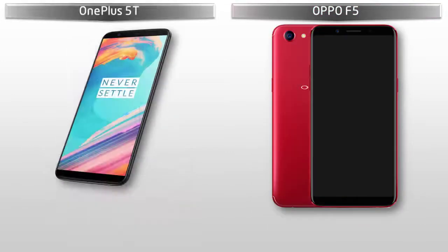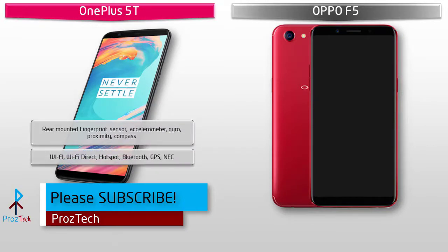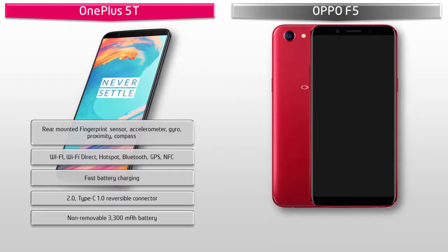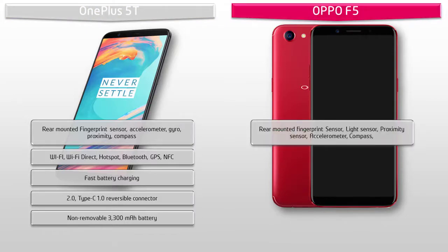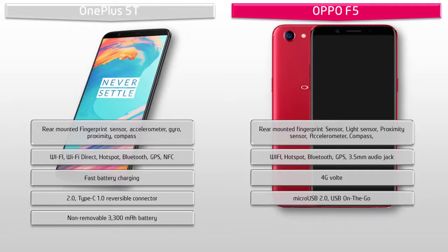The OnePlus 5T features a rear-mounted fingerprint scanner, accelerometer, proximity sensor, compass, gyroscope, Wi-Fi, Wi-Fi Direct, DLNA, hotspot, GPS, Bluetooth, NFC, fast battery charging with a 5V Dash Charger, and a Type-C reversible connector. It does not have an infrared port or FM radio, and is equipped with a non-removable 3300 mAh battery. The Oppo F5 comes with a fingerprint sensor on the back, light sensor, proximity sensor, accelerometer, compass, GPS, Bluetooth, Wi-Fi hotspot, 3.5 mm audio jack, micro USB 2.0, USB OTG, 4G VoLTE support, and a non-removable 3200 mAh battery.